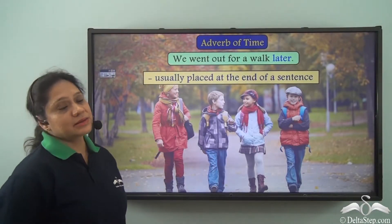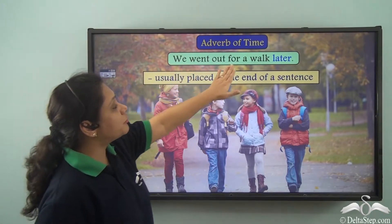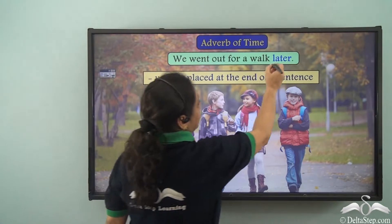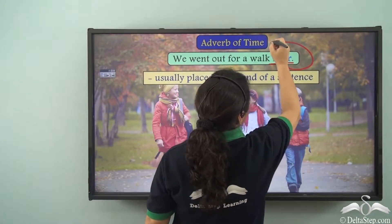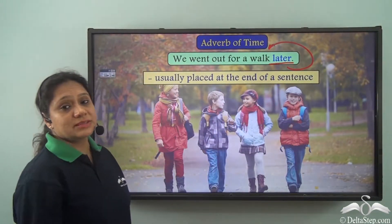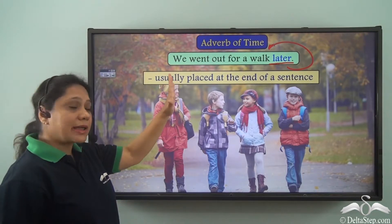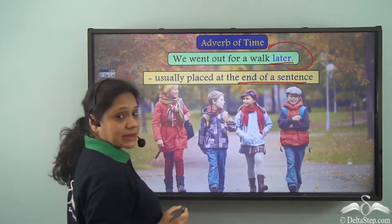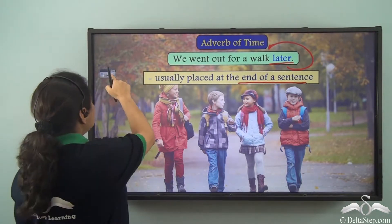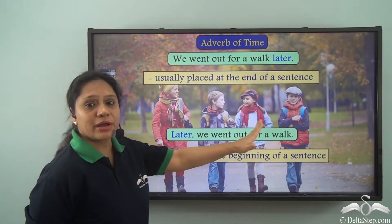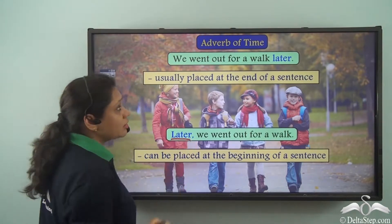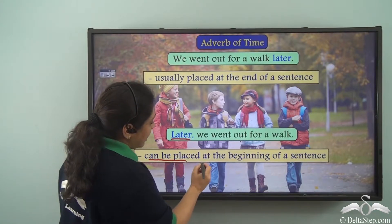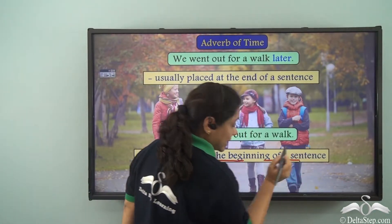Let us look at this sentence: 'We went out for a walk later.' In this sentence, 'later' is an adverb of time, and we see that adverbs of time are usually placed at the end of a sentence. We can also say 'Later, we went out for a walk,' so 'later' can also be placed at the beginning of a sentence.